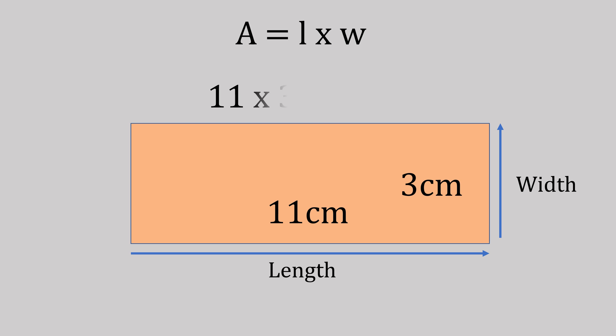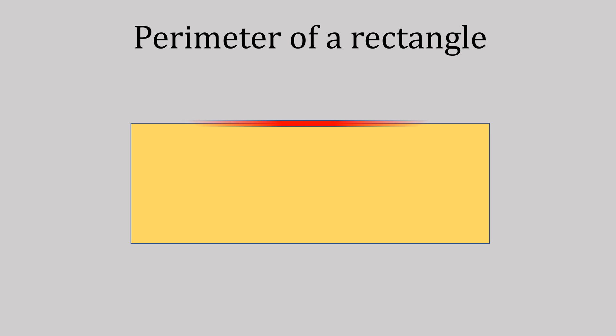So 11 times 3 gives us 33 centimeters. Let's not forget the squared. To find the perimeter of the rectangle, we need to add all the measurements together.